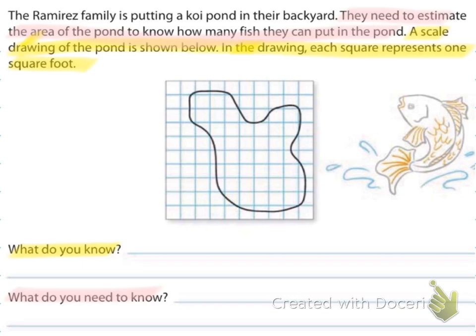What do you know is that there's a scale drawing of the pond shown, and that in the drawing each square represents one square foot. What do you need to know? You need to find the estimate of the area of the pond so they can figure out how many fish.